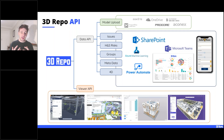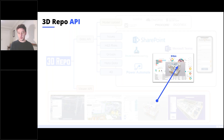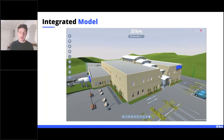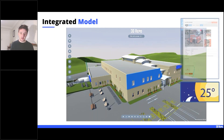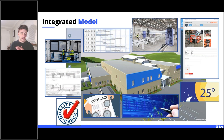Going back to the 3D Repo API, we're already pulling issues, health and safety risks, and groups data into Power BI. We then thought: why not take the viewer API and put it inside the dashboard? That way you get the benefit of not just pulling data down into Power BI, but also visualizing it against the model — which is one of the key elements here.